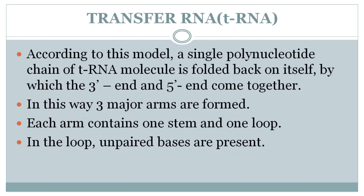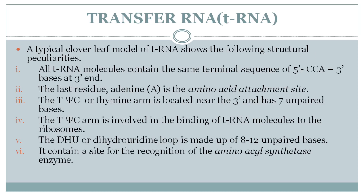According to the Cloverleaf model, a single polynucleotide chain of tRNA is folded back on itself, bringing the 3' end and 5' end together. Three major arms are formed, each containing one stem and one loop. The loop shows unpaired bases. All tRNA molecules contain the same terminal sequence 5'-CCA-3' at the 3' end, and the last residue adenine is the amino acid attachment site.